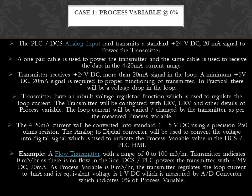The transmitter has a built-in voltage regulator function which is used to regulate the loop current. The transmitter will be configured with LRV, URV, and other details of the process variable. The loop current will be varied by the transmitter as per the measured process variable. The 4-20mA current will be converted into a standard 1 to 5VDC using a precision 250-ohm resistor. The analog-to-digital converter converts the voltage into a digital signal used to indicate the process variable value in the DCS/PLC HMI. Example: a flow transmitter with a range of 0 to 100 m³/hr indicates 0 m³/hr as there is no flow in the line. The DCS/PLC powers the transmitter with +24VDC, 20mA. As the process variable is 0 m³/hr, the transmitter regulates the loop current to 4mA and its equivalent voltage is 1VDC, which is measured by the A/D converter and indicates 0% of process variable.